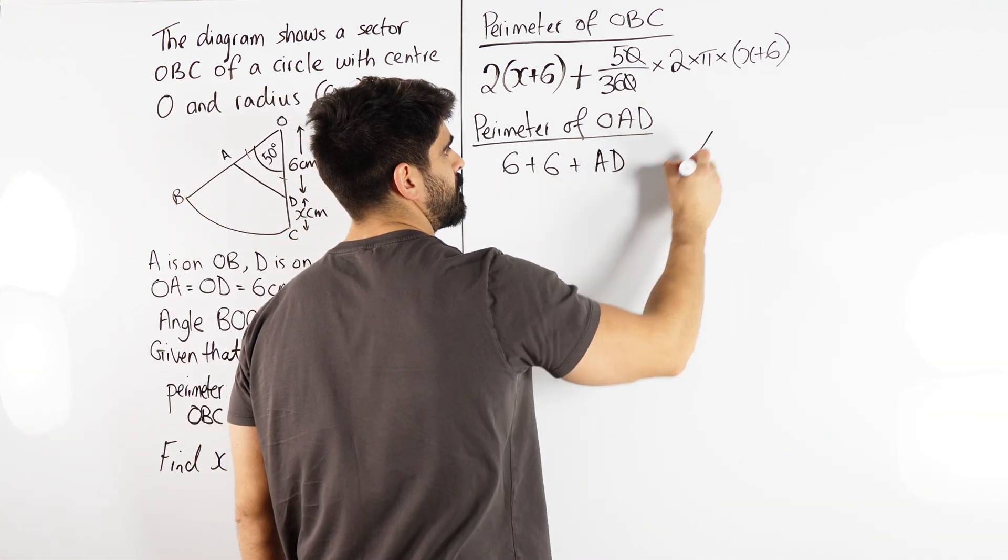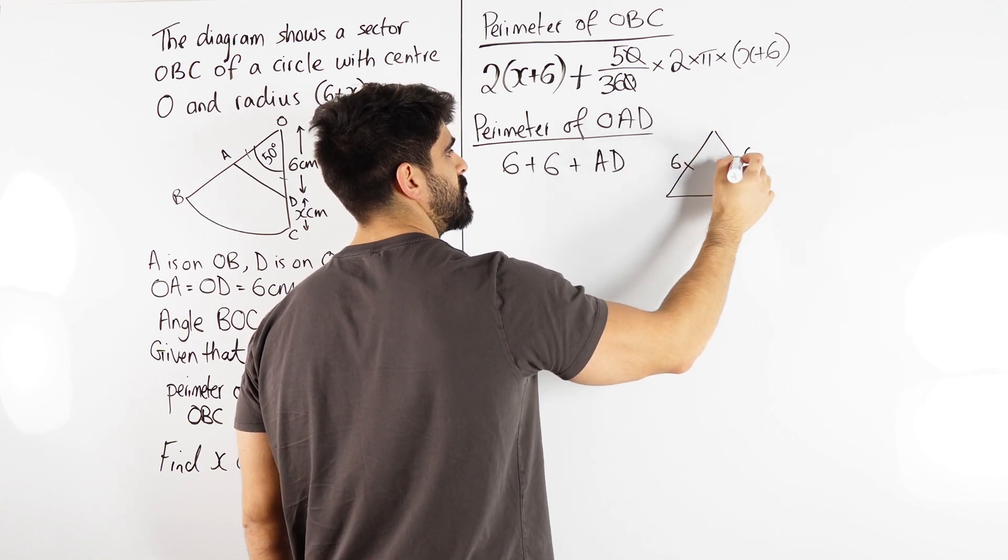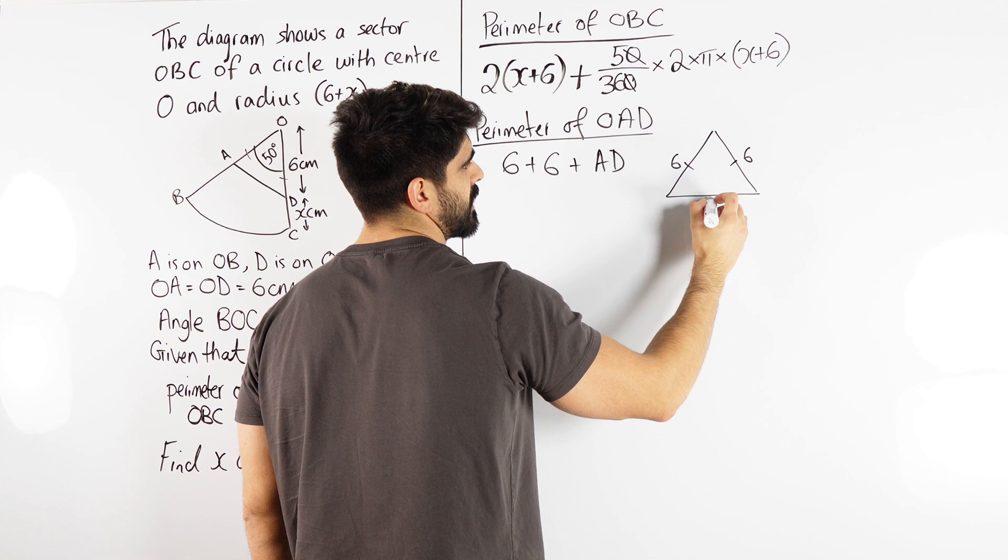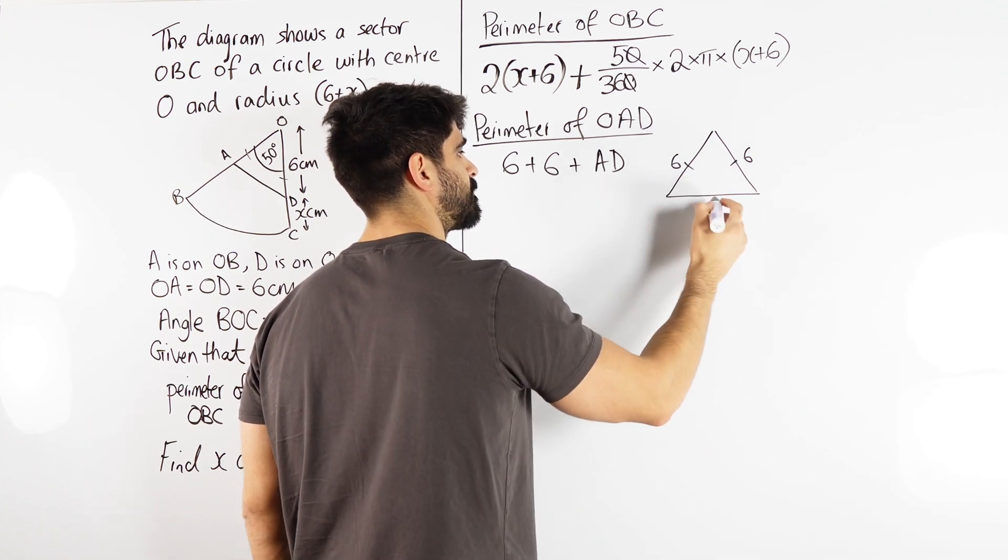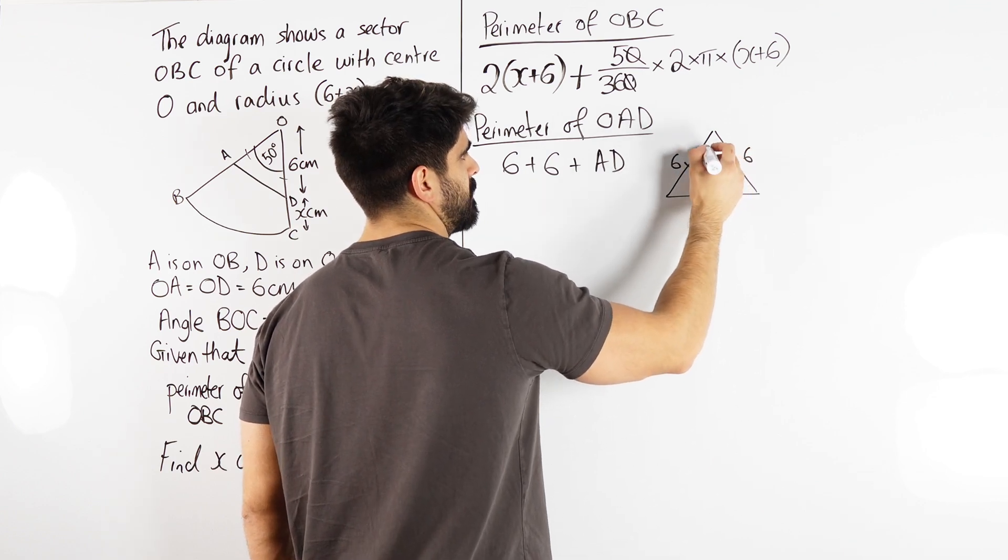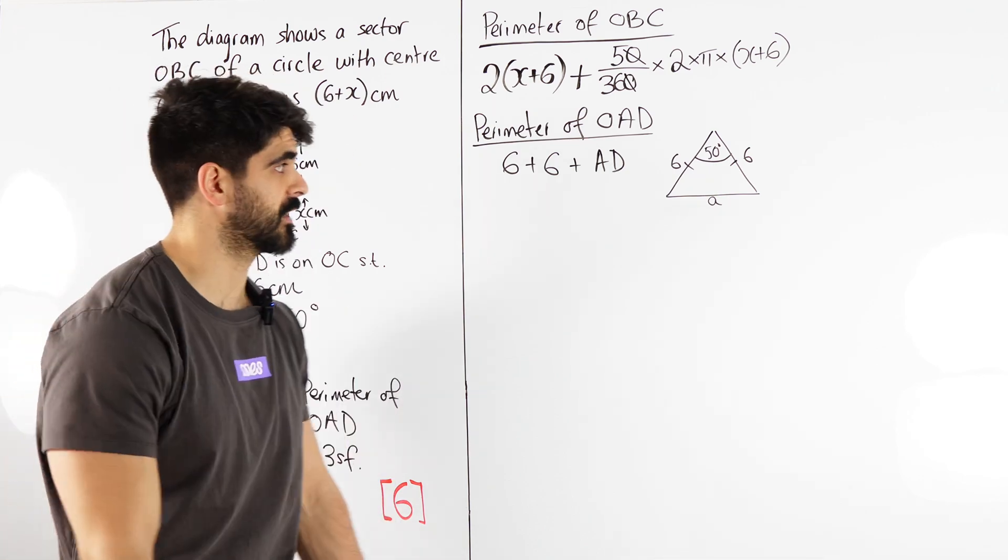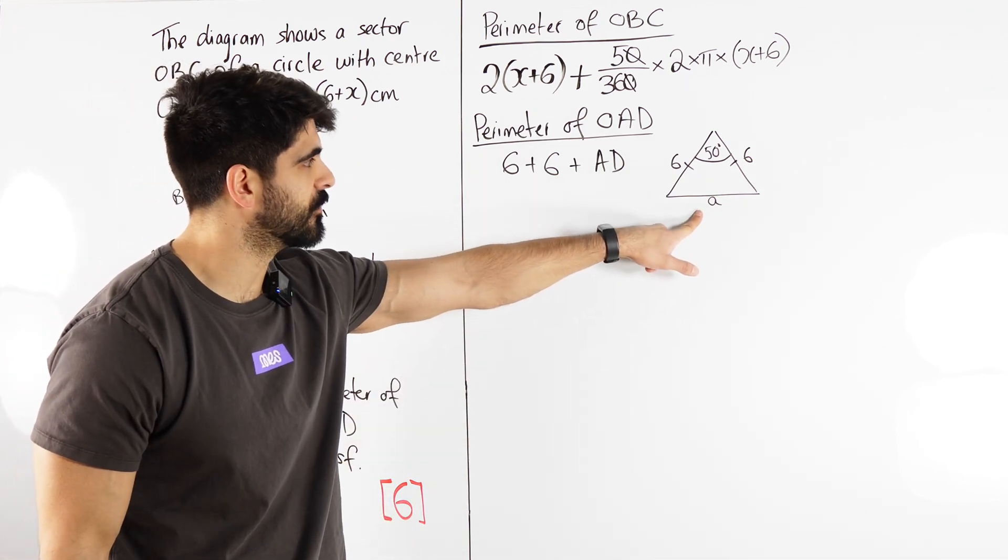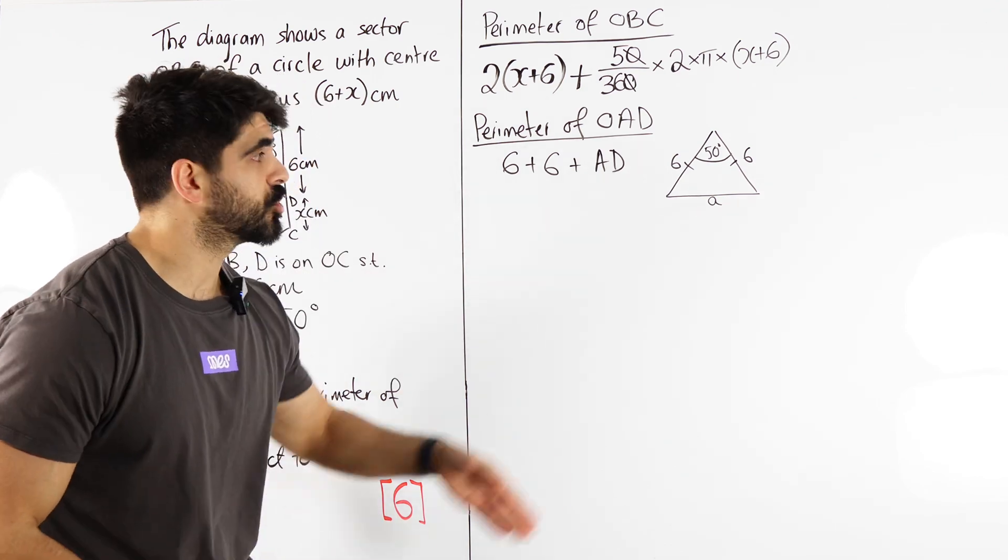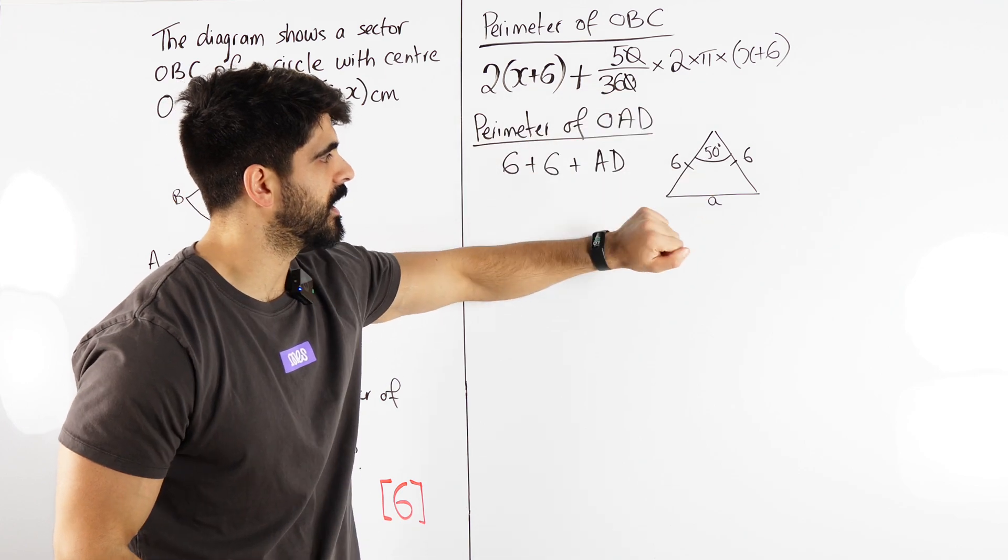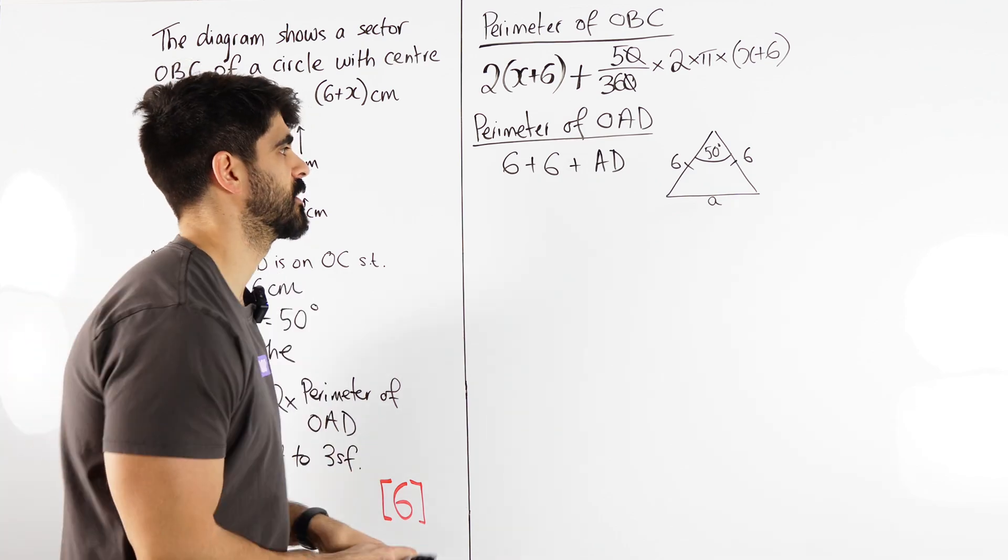But let's think about this. We have this triangle, we have 6, 6, which are the same, and we're trying to work out this length AD. I'm going to call it Y, actually I could call it A for what I'm about to do after. That might be a giveaway. Let's use the cosine rule. Okay, so we're trying to work out this length. Let's use the cosine rule, and then we'll just go from there. Alright? You could, if you want, chop this in half, have 25, use Sokotoa, and then double it to get A. But I think it's good for us to revise the cosine rule as well.